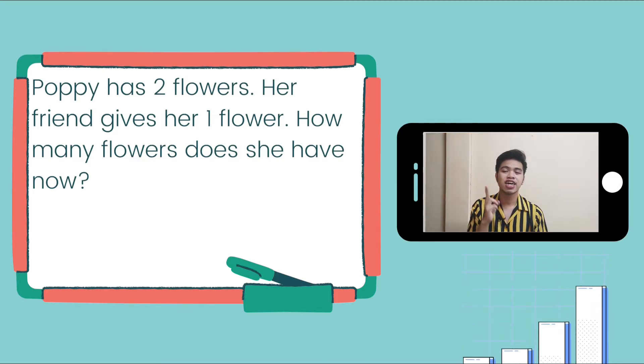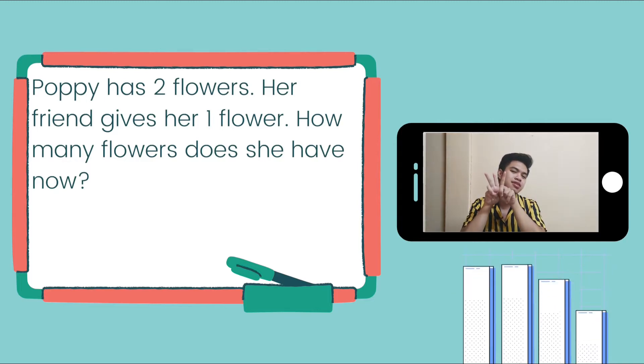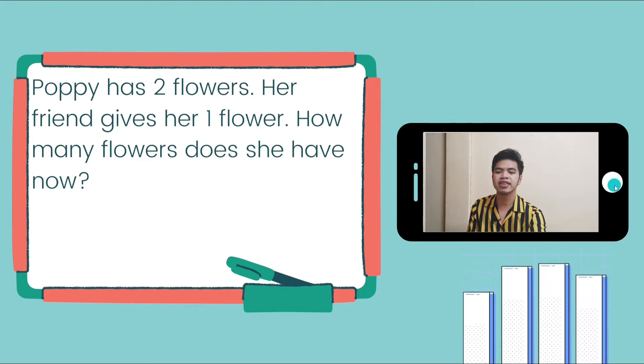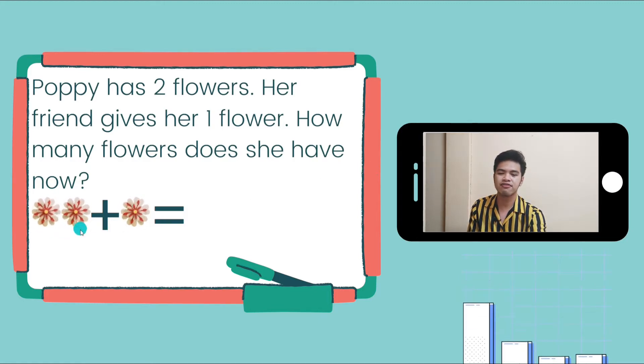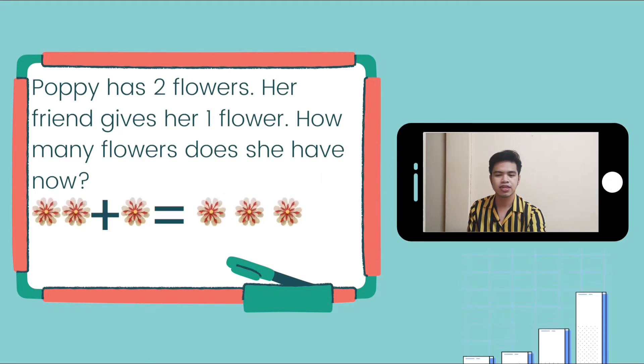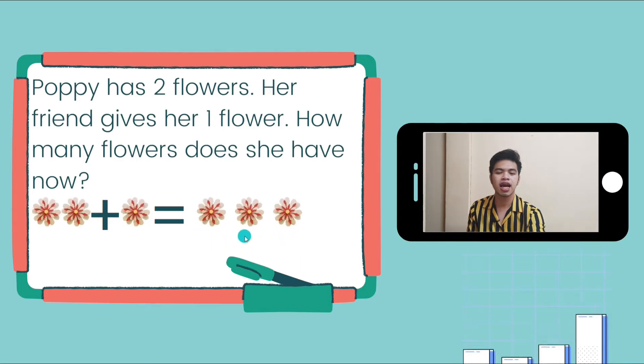And then, her friend gives her another one. How many flowers does she have now? So, we're going to write the number sentence. She got two flowers at first and then she got another one from her friend. It is equal to this amount of flowers.